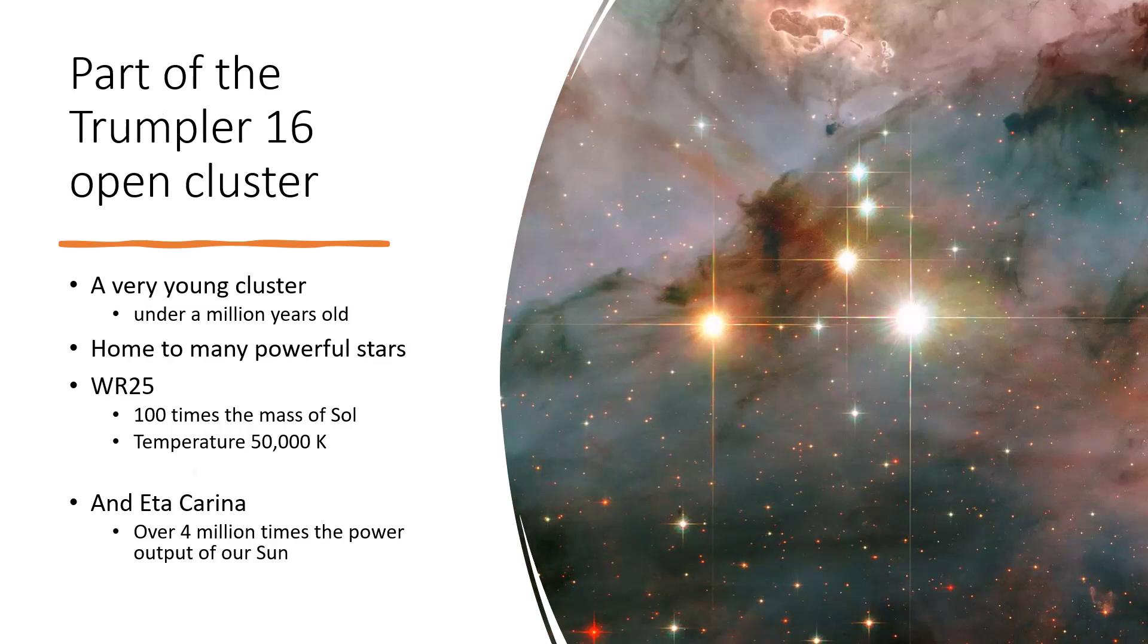WR25 is a Wolf-Rayet star 100 times the mass of our sun, 2 million times the power output, and with a surface temperature of 50,000 degrees. A lot of the light coming out you can't see because it's in the ultraviolet. It's gone way beyond blue hot, it's now UV hot. A very short-lived but powerful star, and of course Eta Carina itself, which we'll talk about in more detail, is even more powerful.